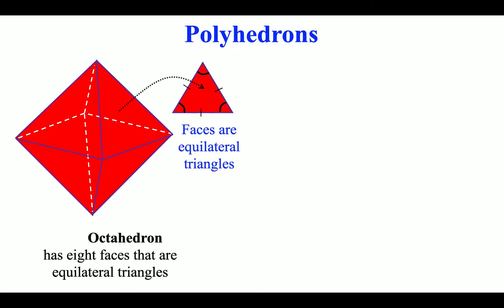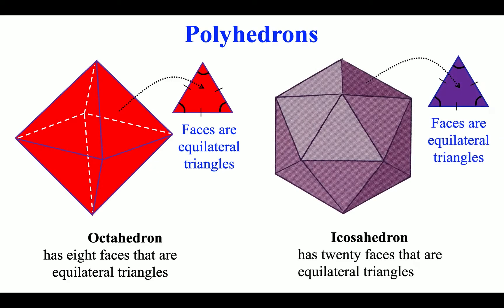Octahedron has eight faces that are equilateral triangles. Icosahedron has 20 faces that are equilateral triangles.